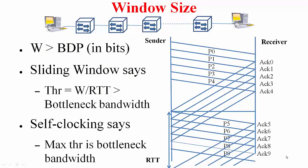Here is a paradox. Suppose W is set greater than the bandwidth-delay product — this can happen because you are estimating W. The sliding window protocol says throughput is W over RTT, which would exceed the bottleneck bandwidth. But self-clocking says you can only send packets in response to ACKs that capture the bottleneck transmission time, so the maximum throughput achievable is the bottleneck bandwidth. Self-clocking is rightly showing you cannot exceed the bottleneck bandwidth.